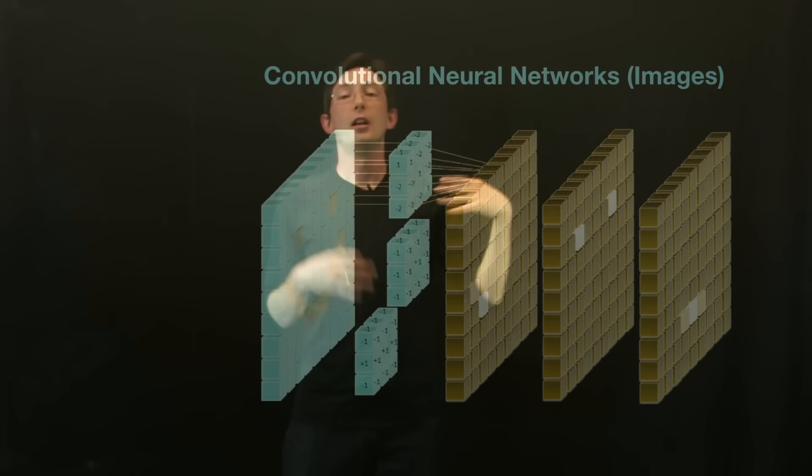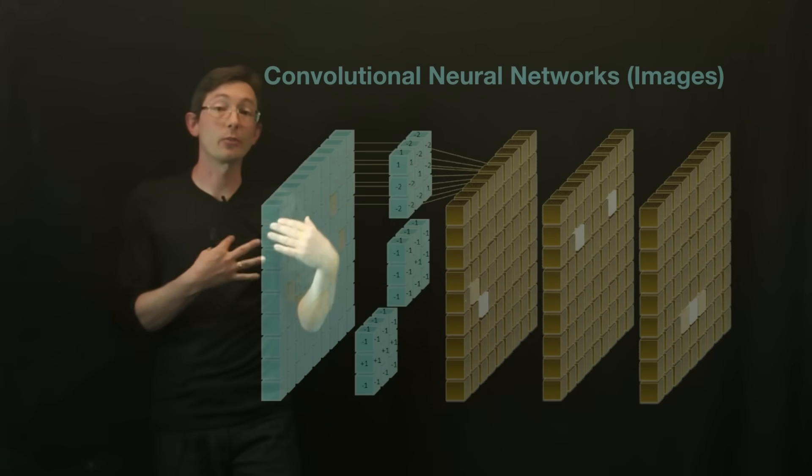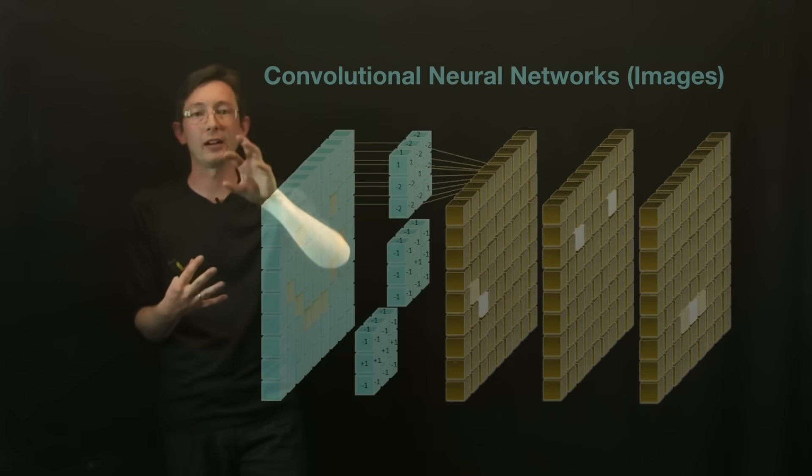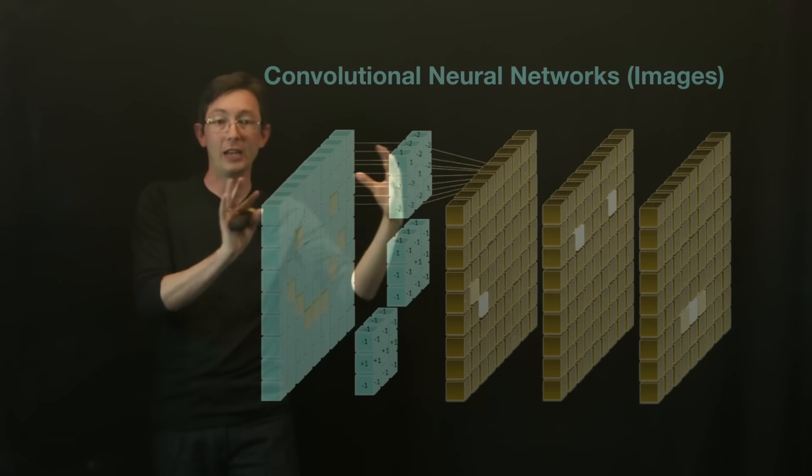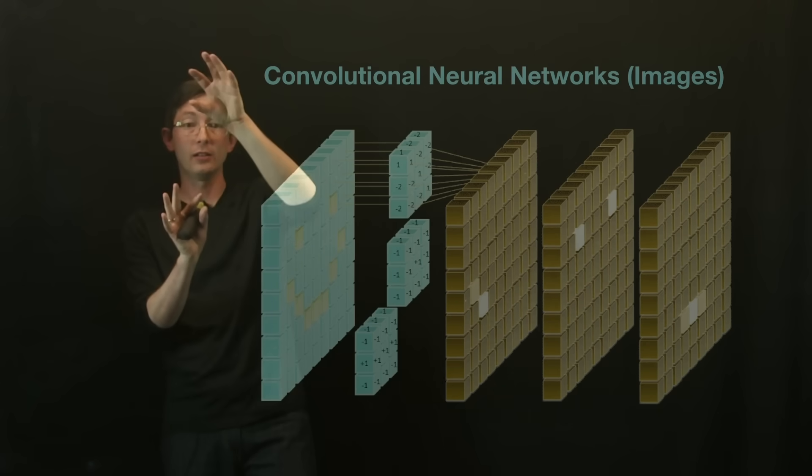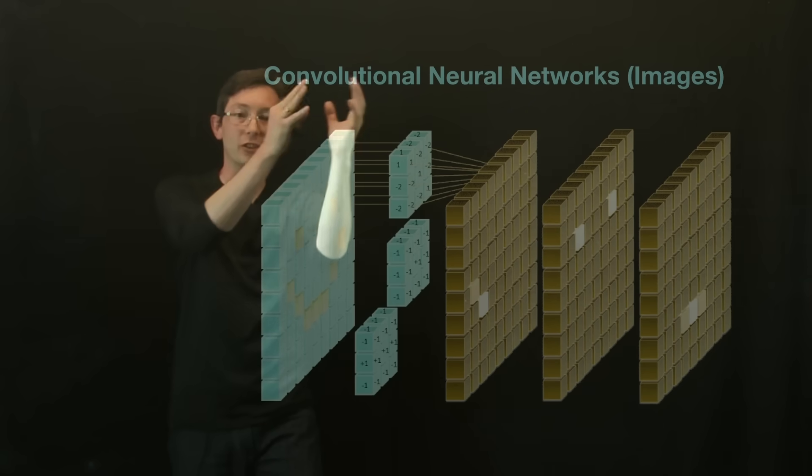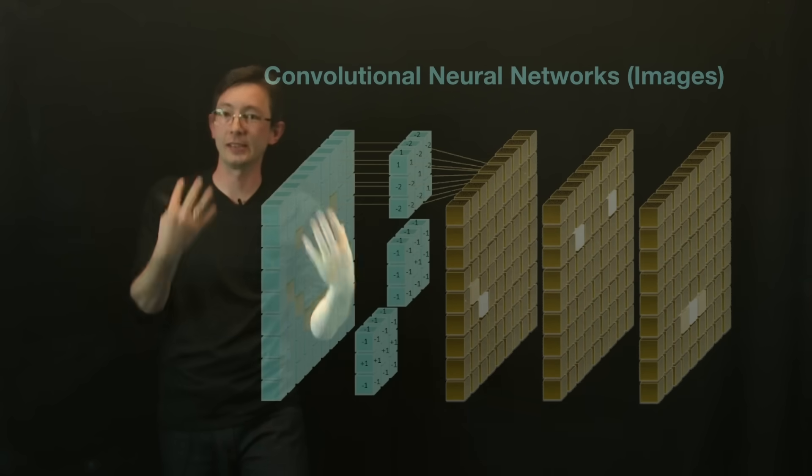Convolutional neural networks, CNNs, are really important for image recognition, anything where there is a translation invariance. If I have a picture of a cat, the cat could be over here or it could be over here. CNNs can start to pull out this translational invariance that exists in images.